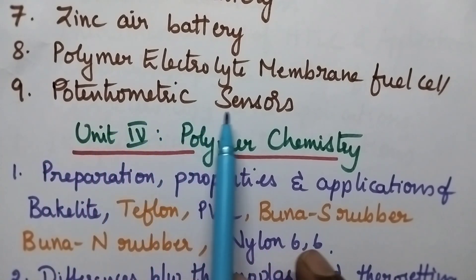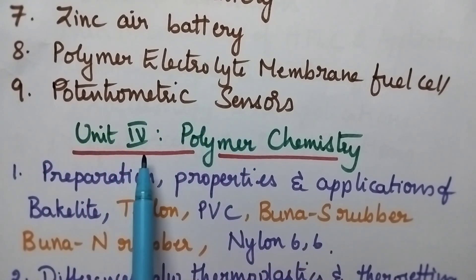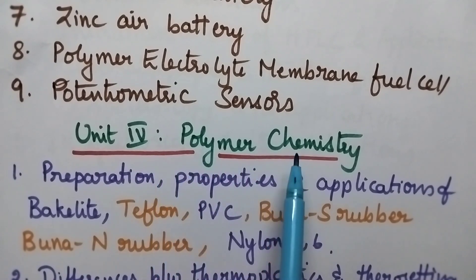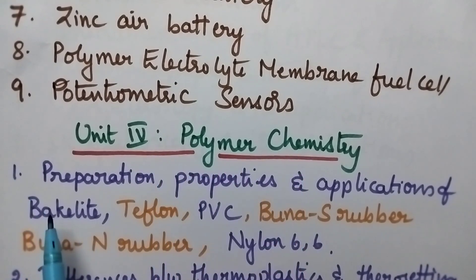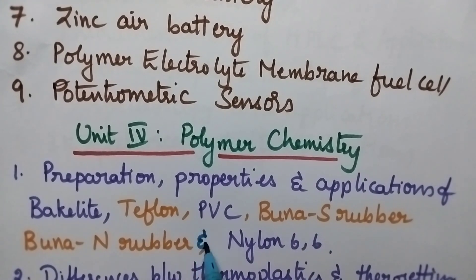Coming to unit 4, which is called as polymer chemistry. The most important question includes preparation, properties and applications of Bakelite, Teflon, PVC, Buna S rubber, Buna N rubber and nylon 6-6.